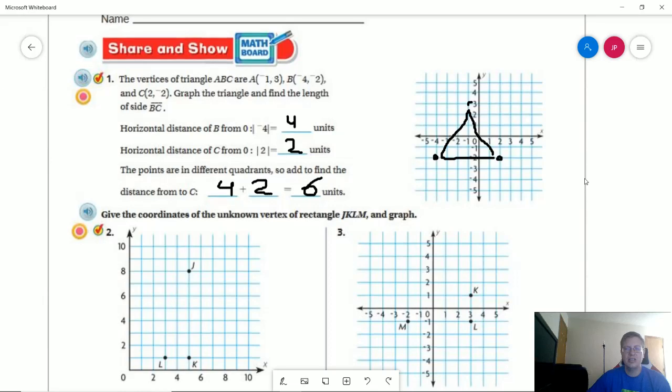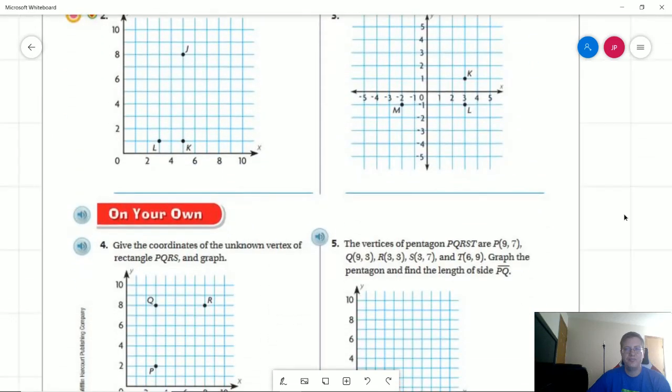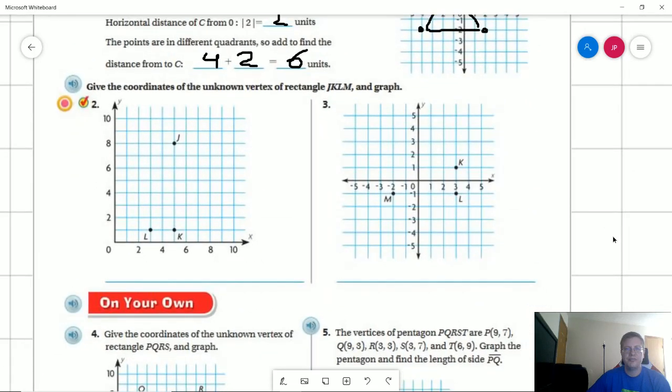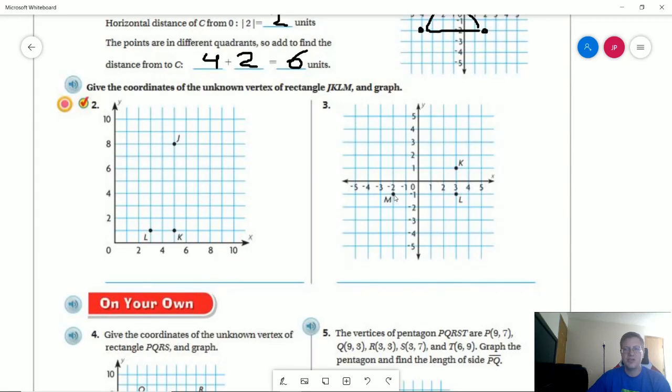Number 3. So we have 3 of our 4 points. We need to figure out what the 4th one is going to be. It looks like our 4th point is going to be in line with K and directly above M. And so that would give a point right here.